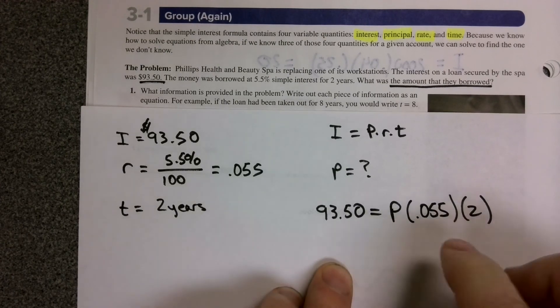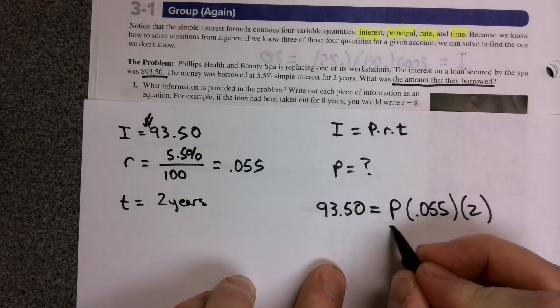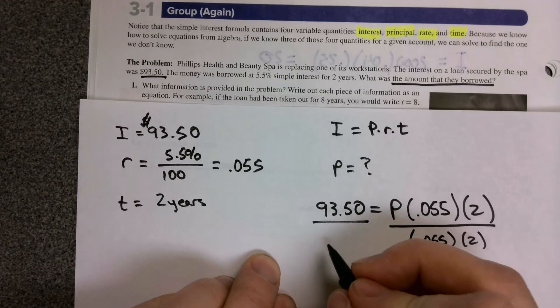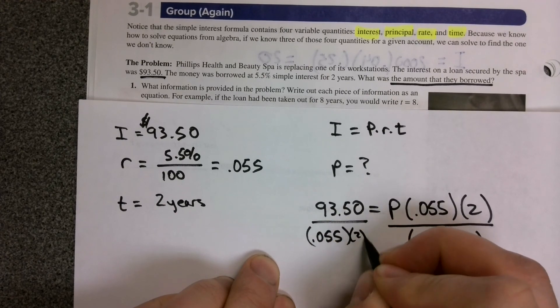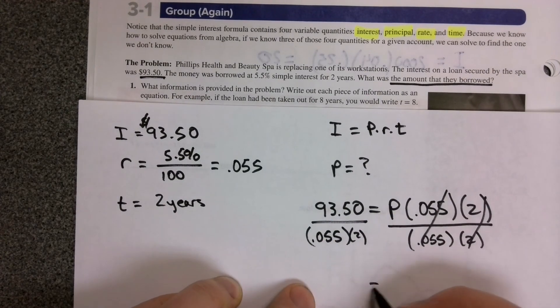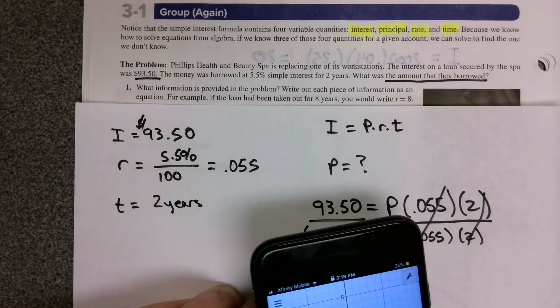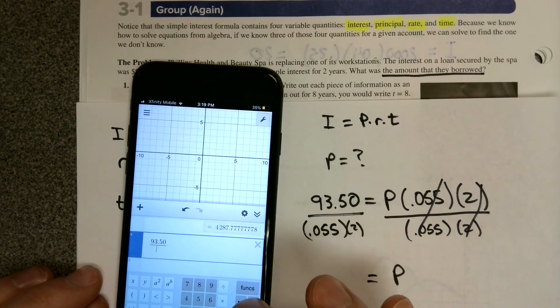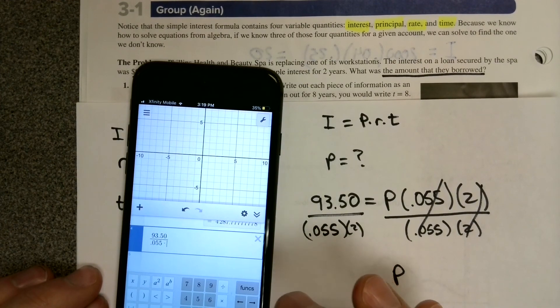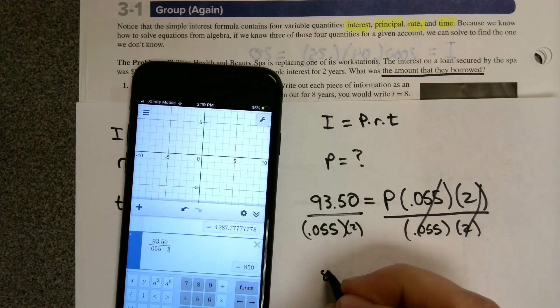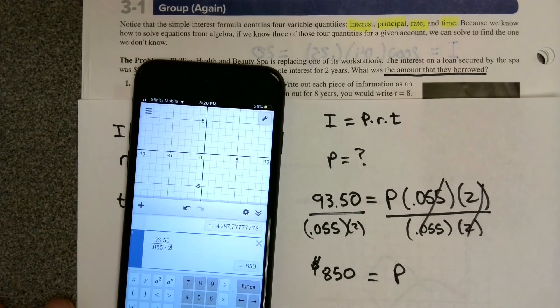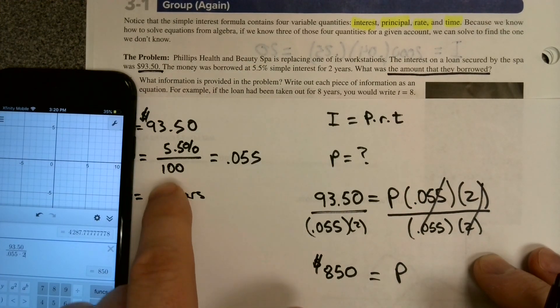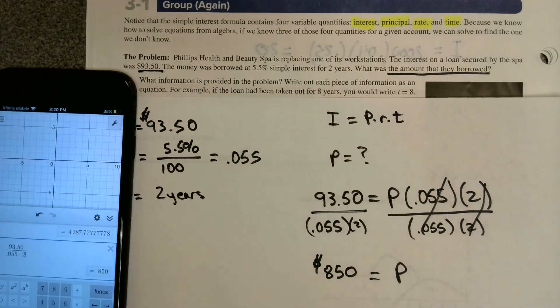We can multiply these two together and divide both sides by that. If I divide by 0.055 times 2, I end up with the amount of principle that we borrowed. Using our Desmos app, we do 93.50 divided by 0.055 times 2, and we would have borrowed $850 originally at 5.5% interest for two years, and we ended up being charged $93.50 at the end of those two years.